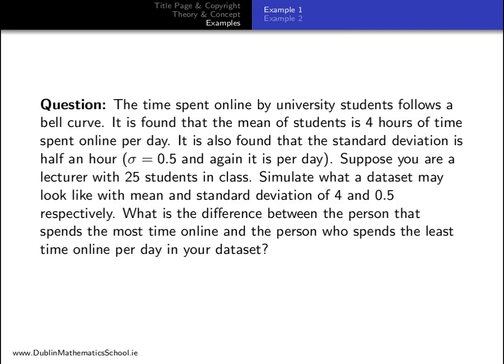Let's look at an example. The time spent online by university students follows a bell curve. It is found that the mean of students is 4 hours of time spent online per day. It is also found that the standard deviation is half an hour. Suppose you are a lecturer with 25 students in class. Simulate what a data set may look like with mean and standard deviation of 4 and 0.5 respectively. What is the difference between the person that spends the most time online and the person who spends the least time online per day in your data set?